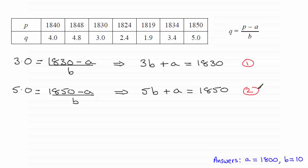It's easy to see that if we do equation 2 take away equation 1 then we would eliminate the values a. So equation 2 take away equation 1 gives us 5b take 3b which is 2b and that's 1850 take away 1830 gives us 20. Therefore b must equal 10.